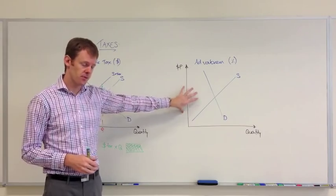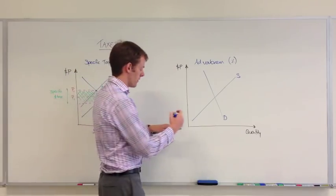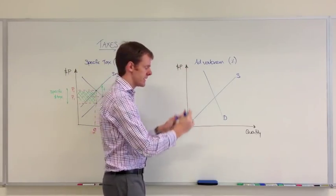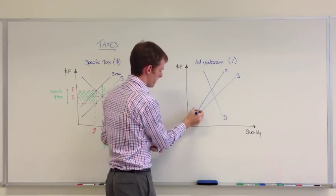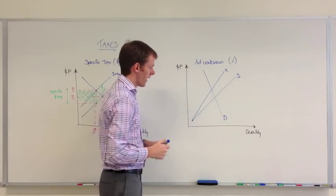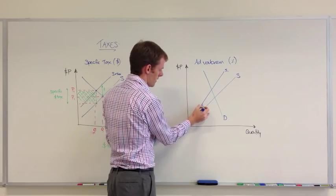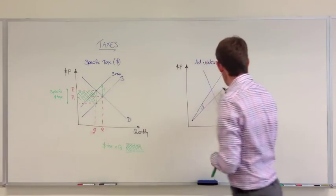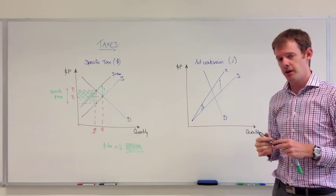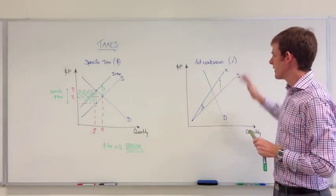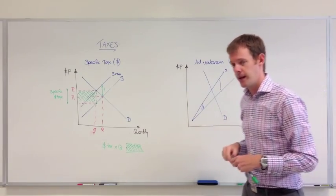If the tax is taxed as a percentage, not as a specific tax but as an ad valorem tax, we show it slightly differently. We show it with a supply curve that splits and goes apart. This is because the difference between here and here might be 10%, which is also the same as a 10% change in the price slightly further up the supply curve. Remember, these are proportionate taxes. These are specific taxes.